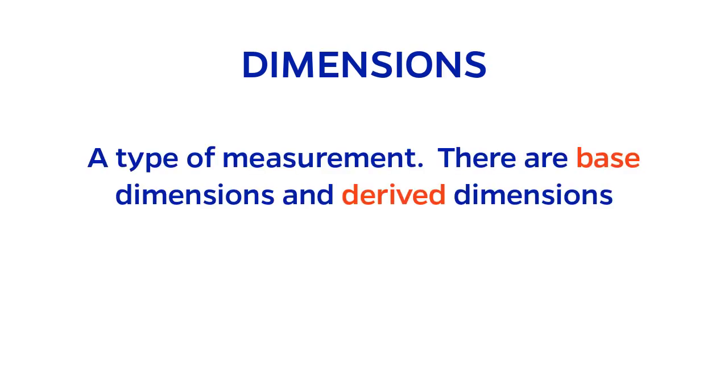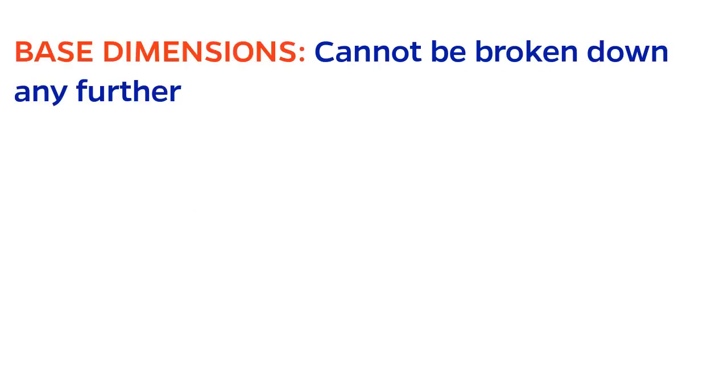Dimensions. A dimension is a type of measurement. Dimensions can be categorized into base dimensions and derived dimensions. Base dimensions, as it sounds like, are basic. They cannot be broken down any further. In chemical engineering, there are five base dimensions that we care about.